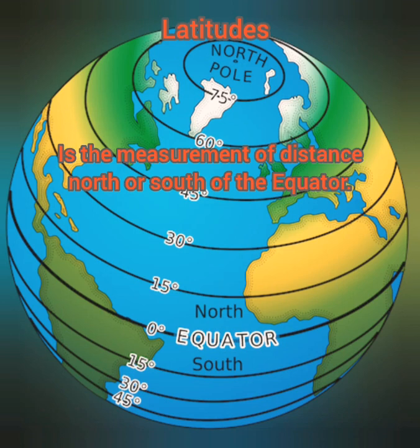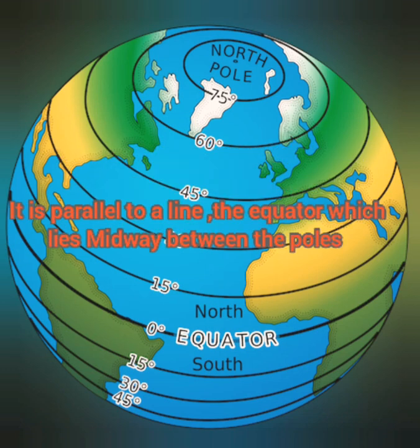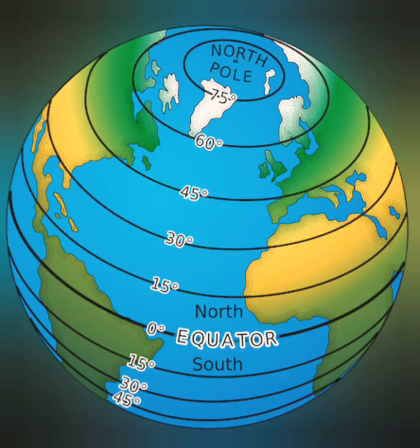Latitude is a measurement of distance between two places north and south of the equator. If you can see the globe, the equator, which is 0 degrees, is dividing the earth into two equal halves — the northern hemisphere and southern hemisphere. All the other latitudes are parallel to the equator: 15 degrees, 30 degrees, 45, 60 degrees, 75 to 90 degrees north and south of the equator.